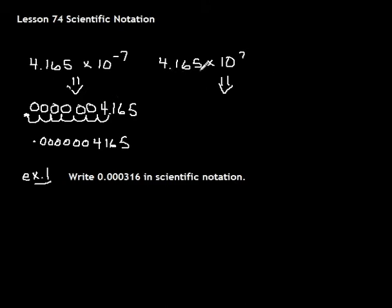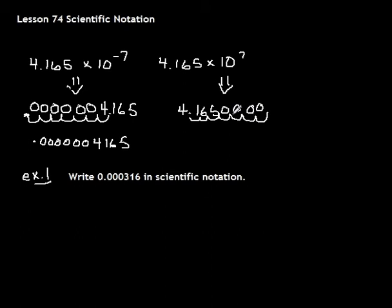Now this time we have 4.165 multiplied by 10 to the 7. We know 10 to the 7 would be a rather big number, so the number is going to get bigger. We're going to move our decimal place seven places to the right to make it a bigger number, filling in zeros. If you start where the decimal point is, we move it over seven spots — we're not just adding seven zeros, we're multiplying by 10 to the 7. So we get 41,650,000.